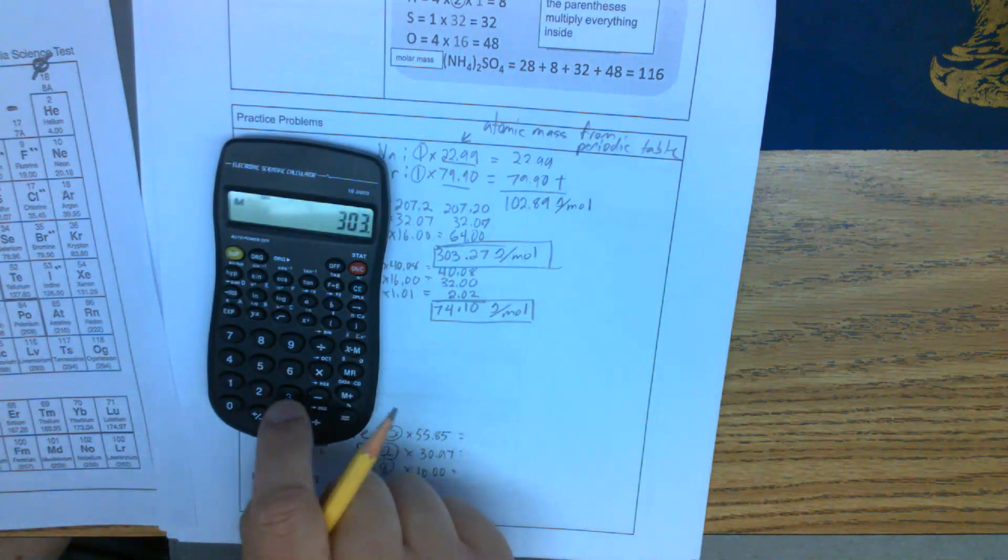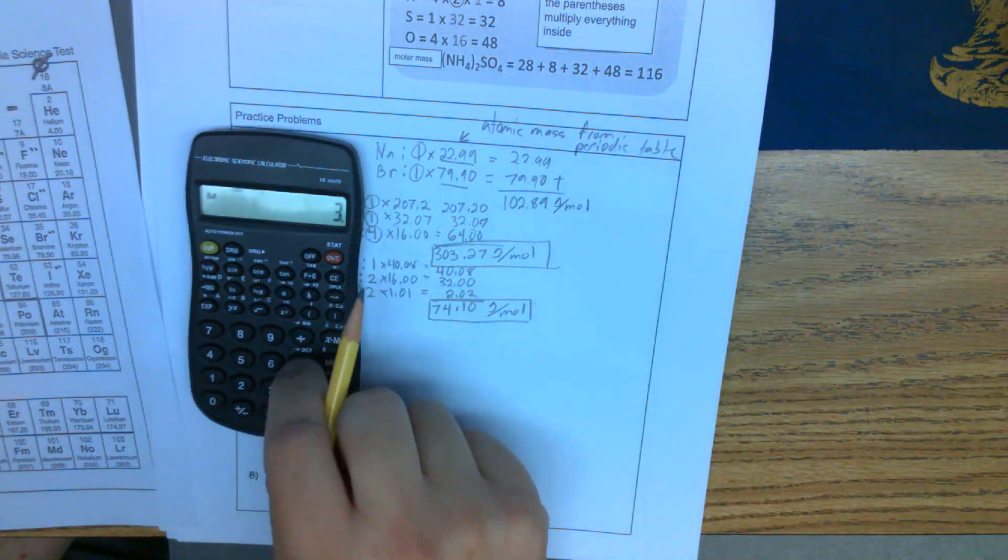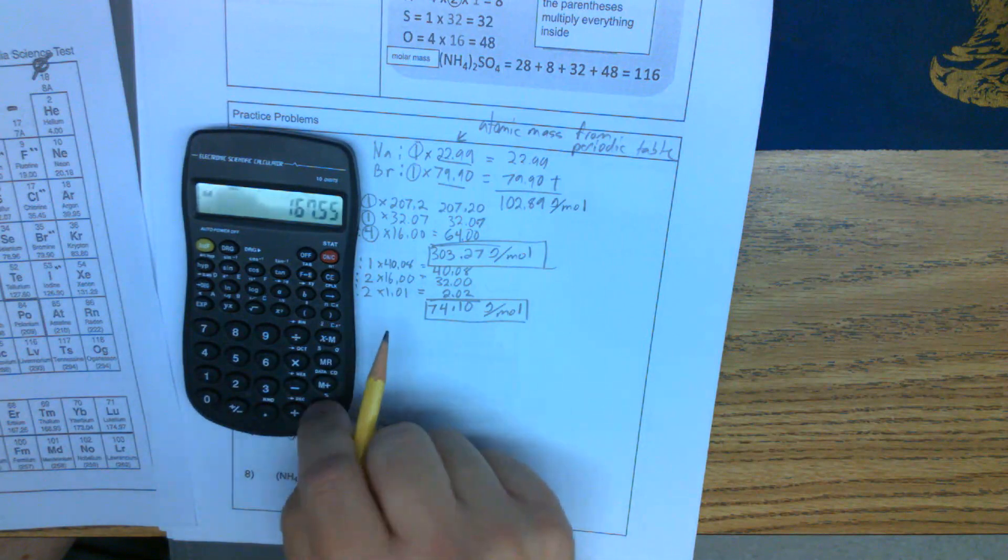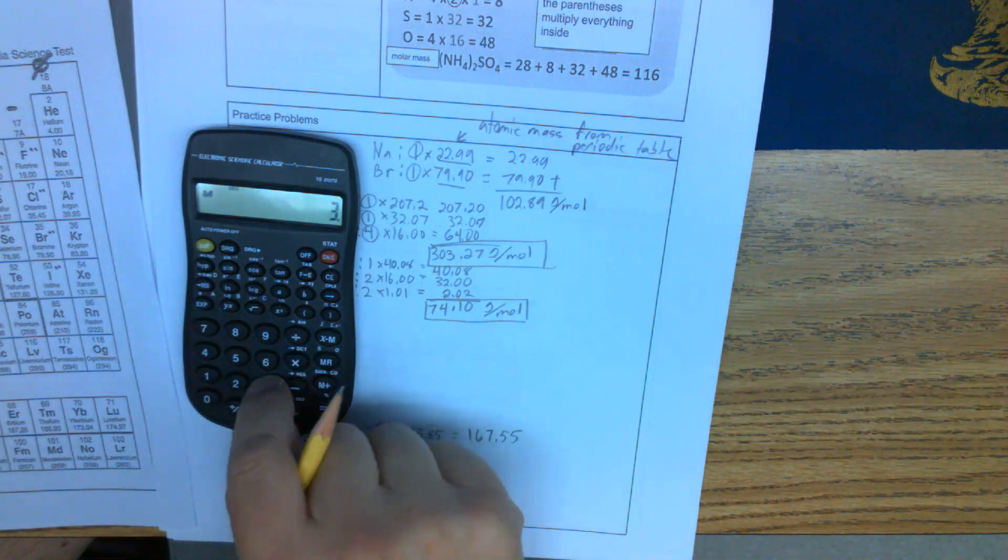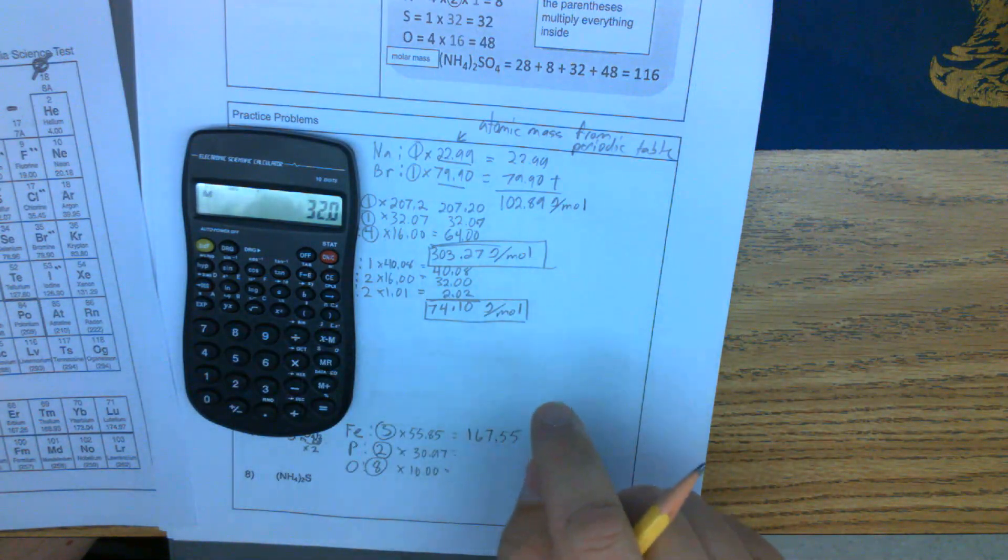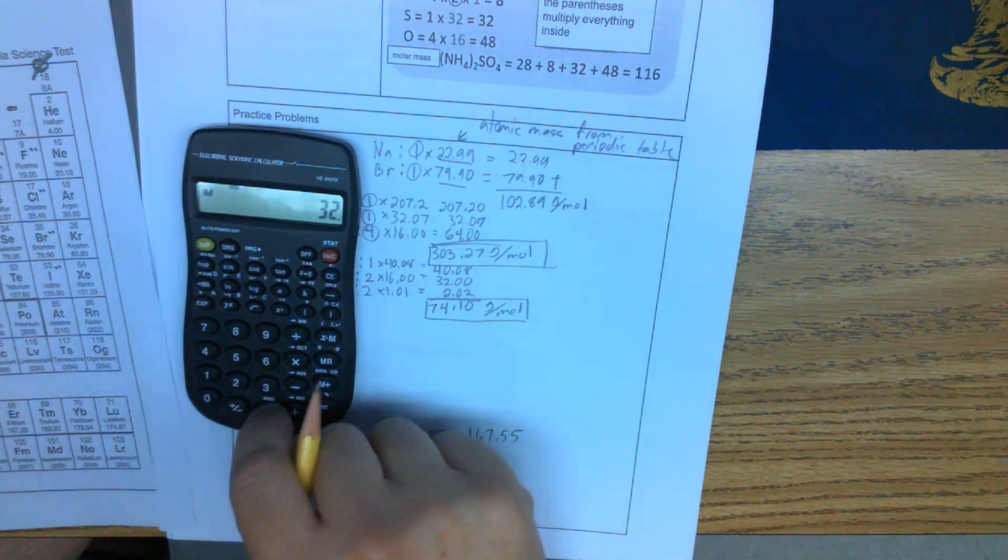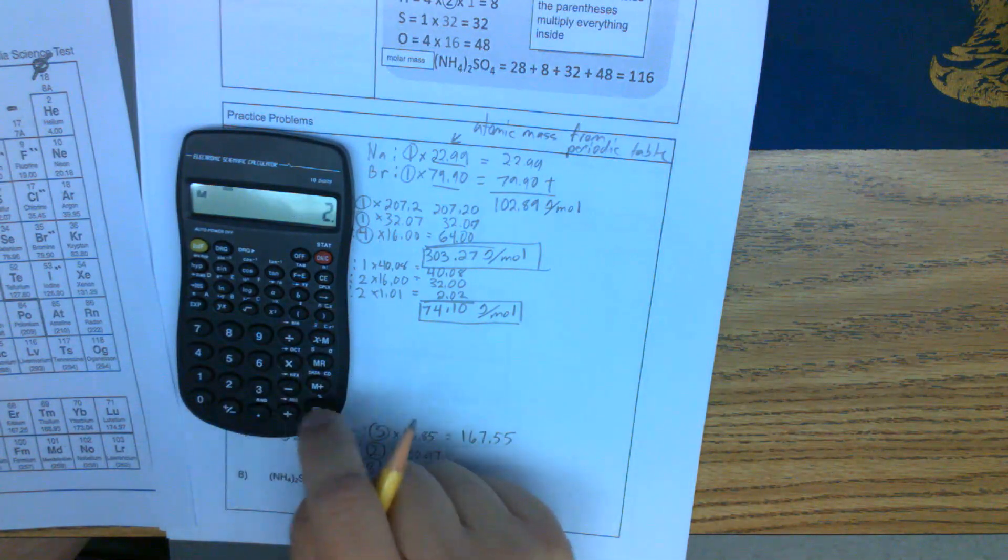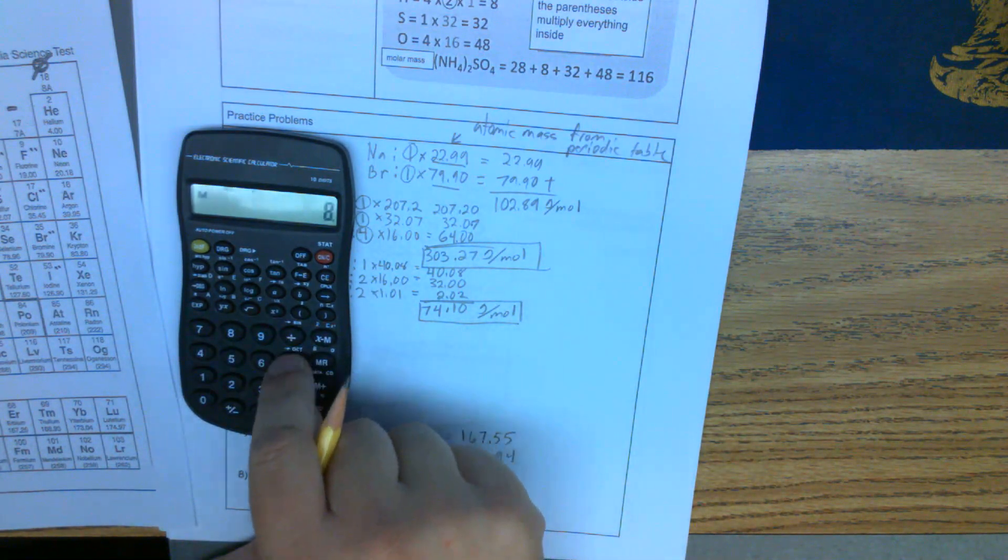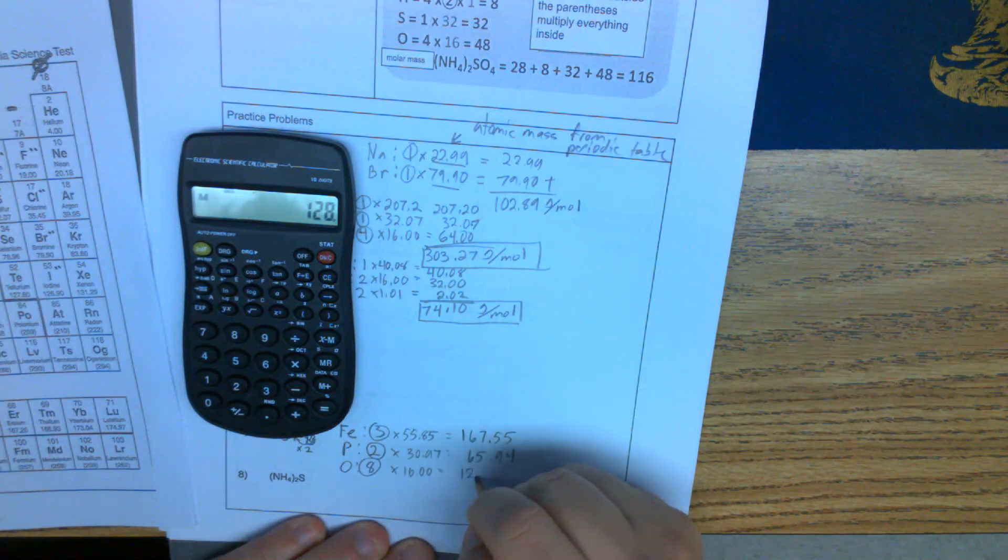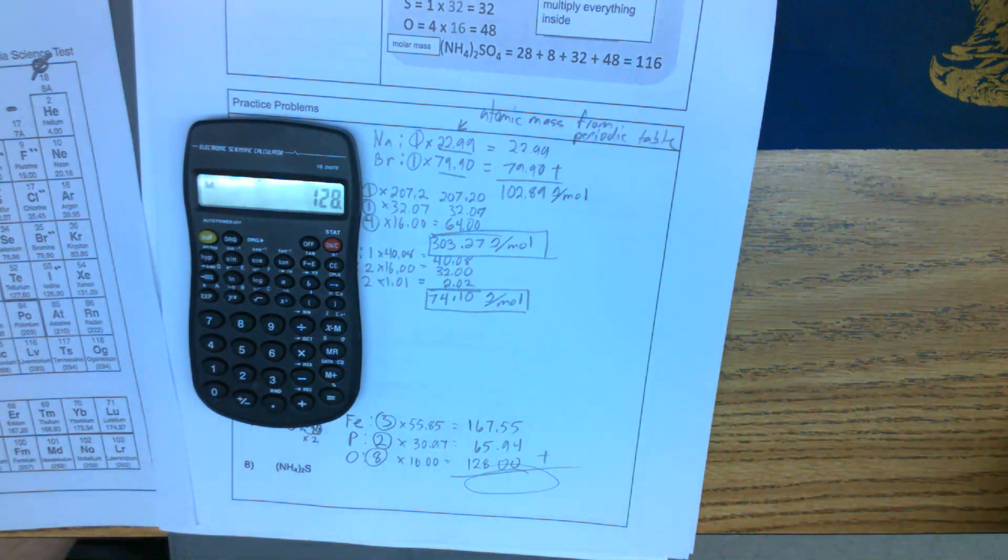Let's multiply these out. We're going to do 3 times 55.85, so we're at 167.55. We'll do 2 times 32.97, so we'll have 65.94. And then 8 times 16 gives us 128.00. Add those up and you'll get your final answer. I'll let you guys add them up and you can get your answer.